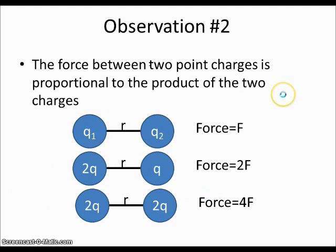The second observation that was contributed to Coulomb's law is that the force between two point charges is proportional to the product of both charges. So if I have the same charges as I had before, q1 and q2, and I hold the distance between them constant so the distance is always r.